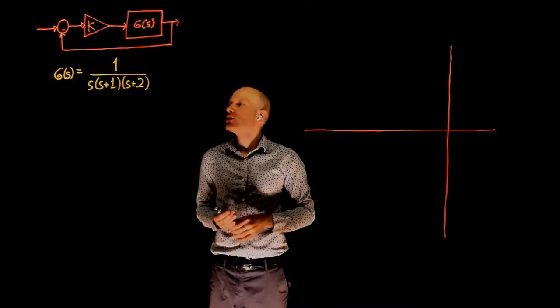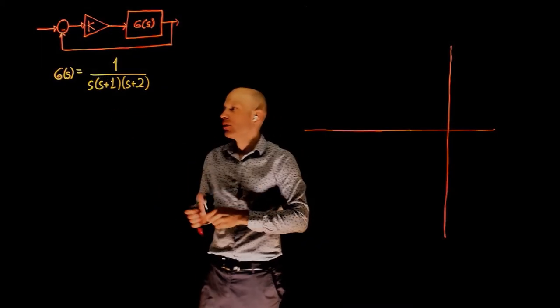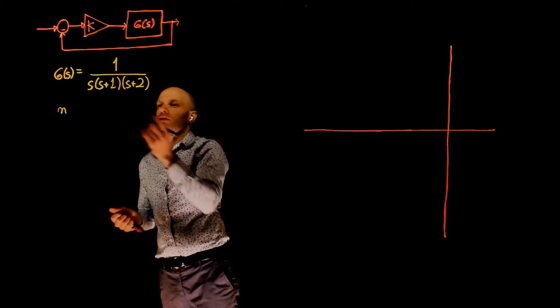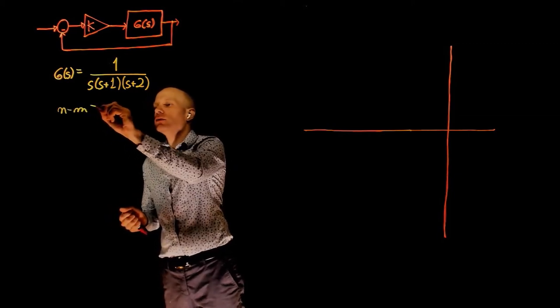In this example, we have three poles, then zeros. We have an excess of three poles, n is 3 and m is 0, no zeros.